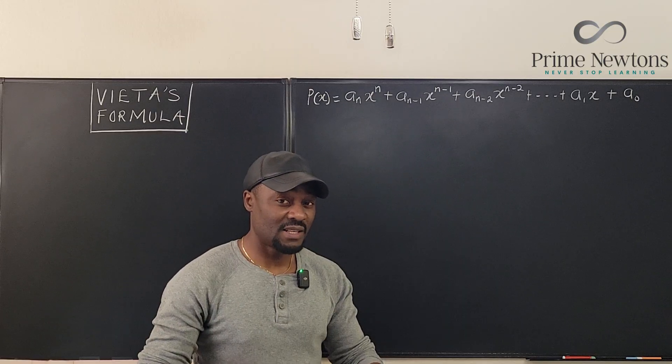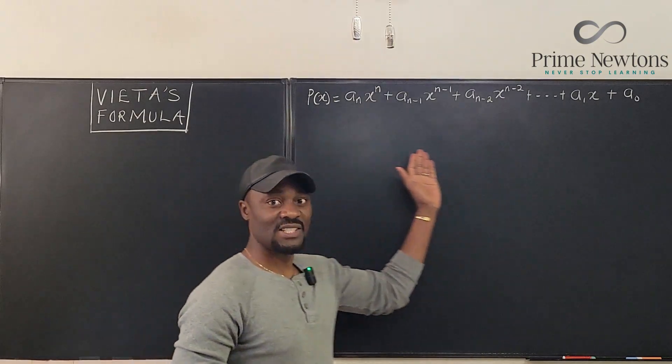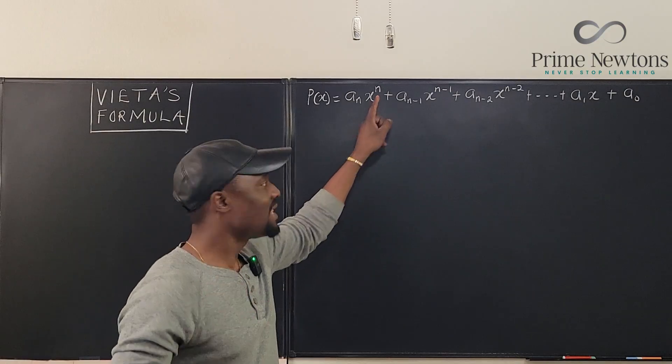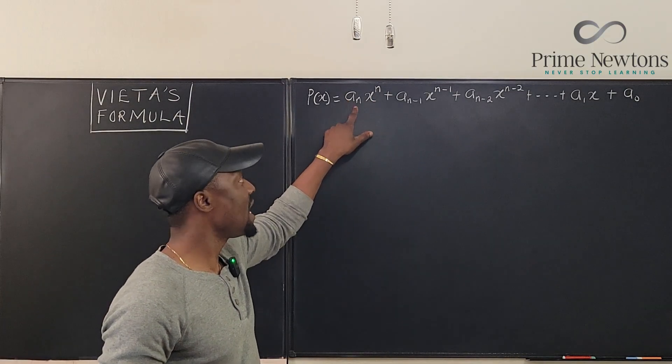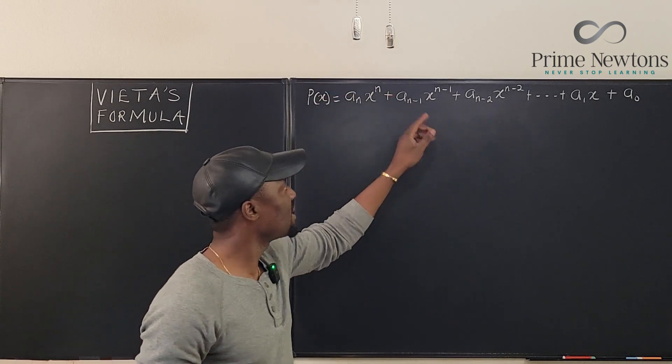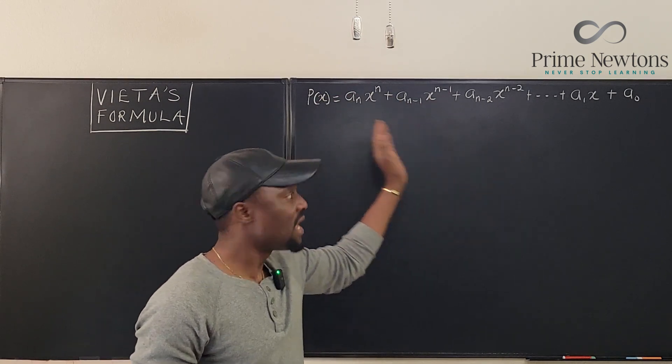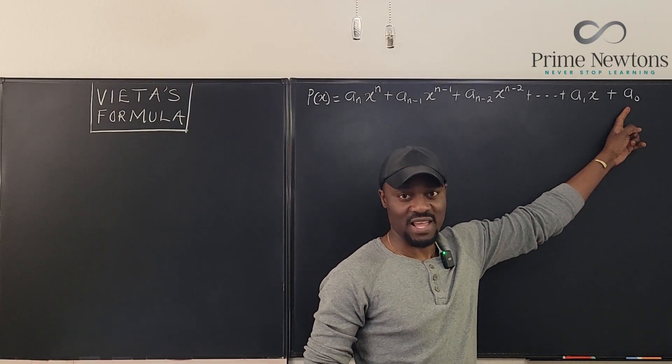What is Vieta's formula? Let me just show you from this. This is the general form of a polynomial of nth degree. Let's take the leading polynomial coefficient to be a sub n. The next one is going to be a sub n minus one and the degree is going to be n minus one. And we keep going down like that until we get to the constant term at the end.